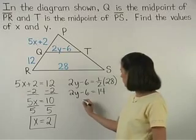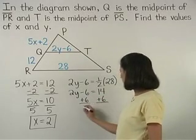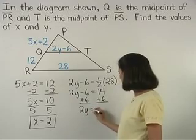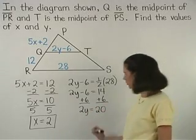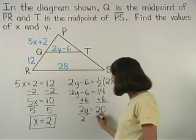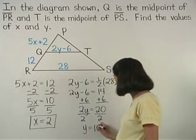And adding 6 to both sides, we have 2Y equals 20. And dividing both sides by 2, we find that Y equals 10. There you go. That's a good one.